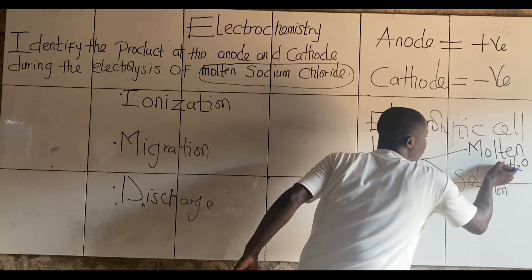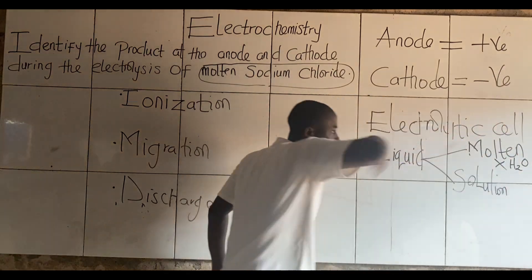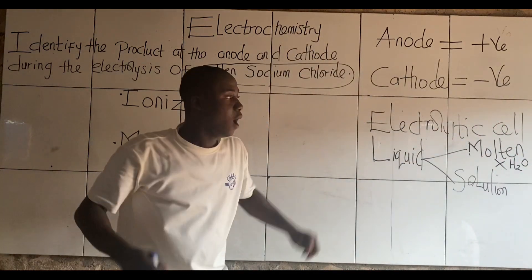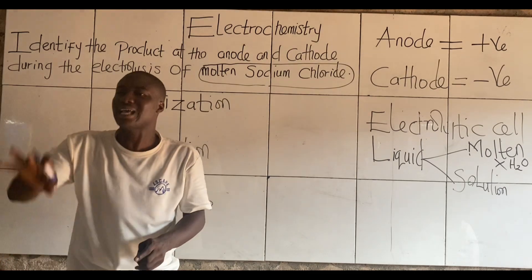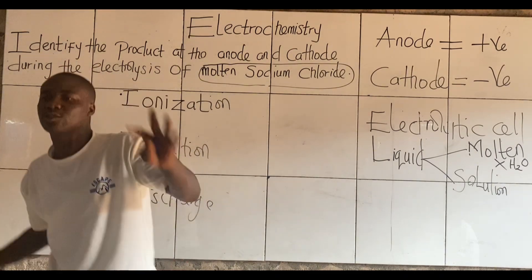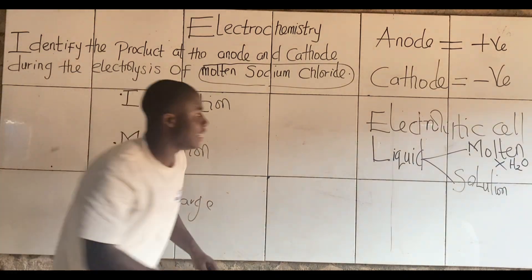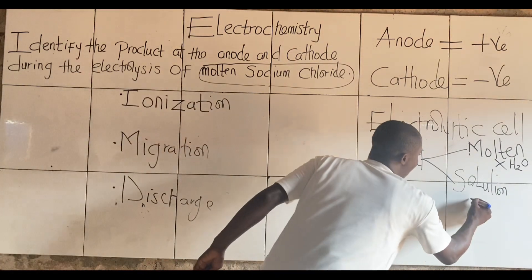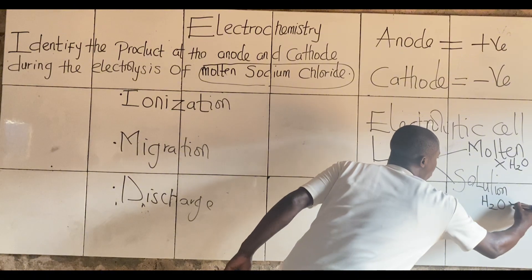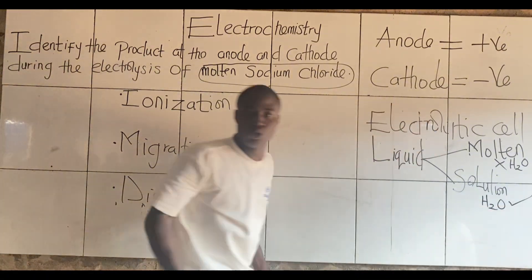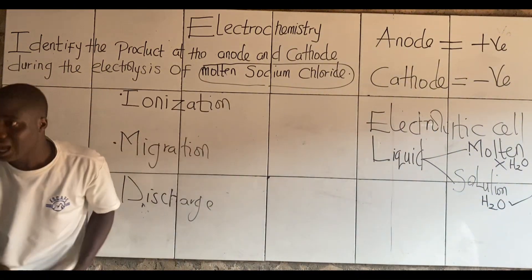I told you guys that when a compound is molten, it means that compound has no water attached. So molten means there is no water — water is out. But for solution, it means that compound has water in it, so I will add H2O.